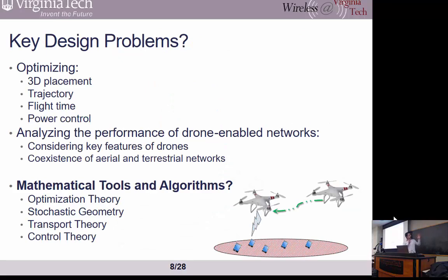The key problems we need to address include placement, trajectory optimization, flight time optimization, and power control. We need to perform performance analysis considering key UAV features such as flexibility and mobility. We also need to analyze the coexistence of aerial networks with terrestrial networks. To do so, we need mathematical tools such as optimization theory, stochastic geometry for performance analysis, transport theory, and control theory in order to control the drones.